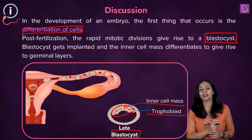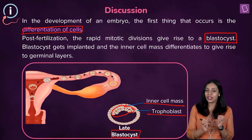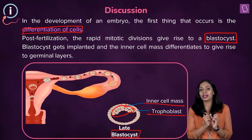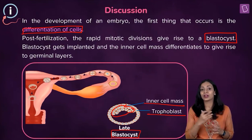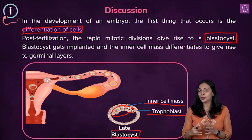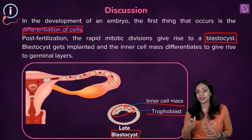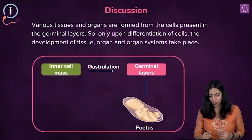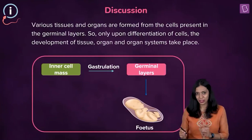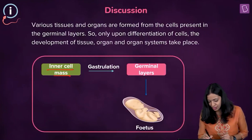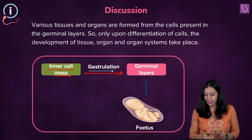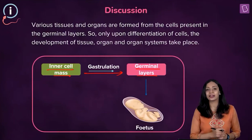The cells in the inner cell mass will undergo various rearrangements and fold upon itself to form three different layers known as the germinal layers. At that stage, the embryo is called the gastrula and the process is called gastrulation. The three germ layers are the ectoderm, endoderm, and mesoderm.